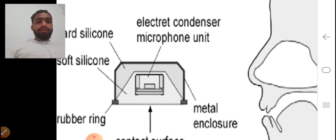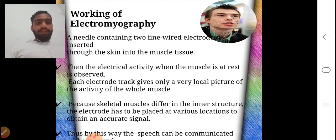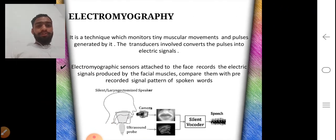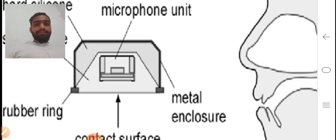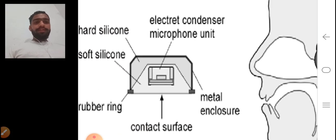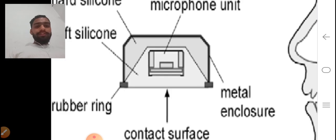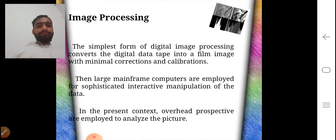This is the diagram of the ultrasound probe which is attached to our skin. This is made up of microphone and soft silicon which is covered by hard silicon and the metal enclosure. This lower one is our contact surface where this is attached to us. Image processing, this is the second method.